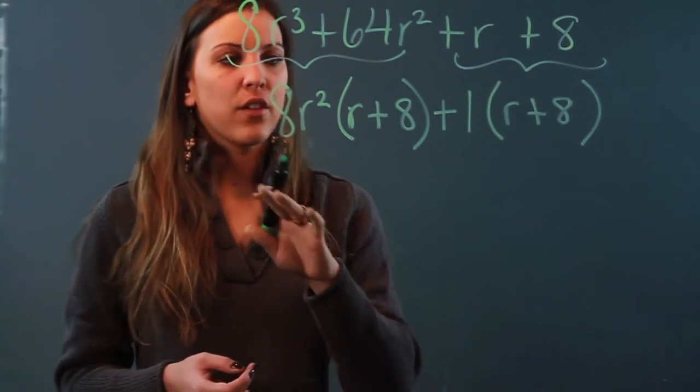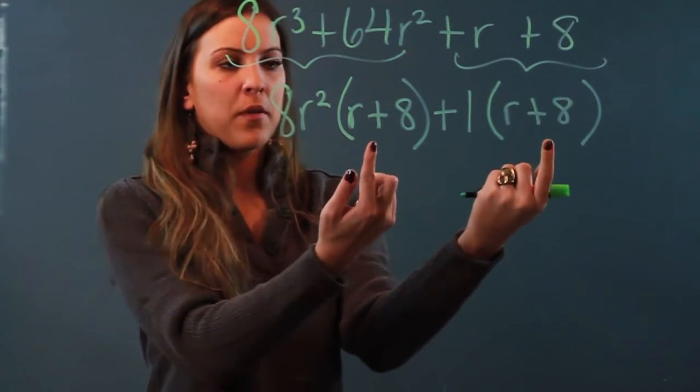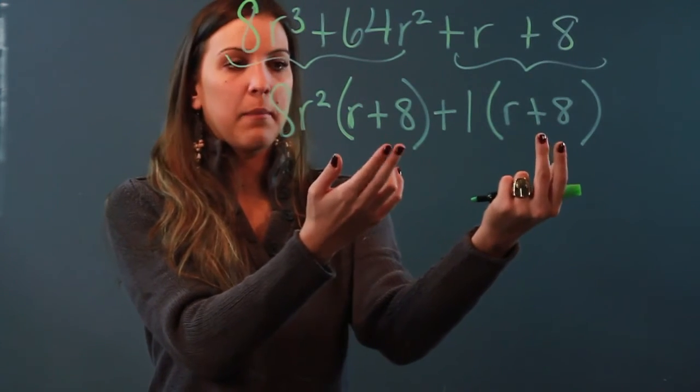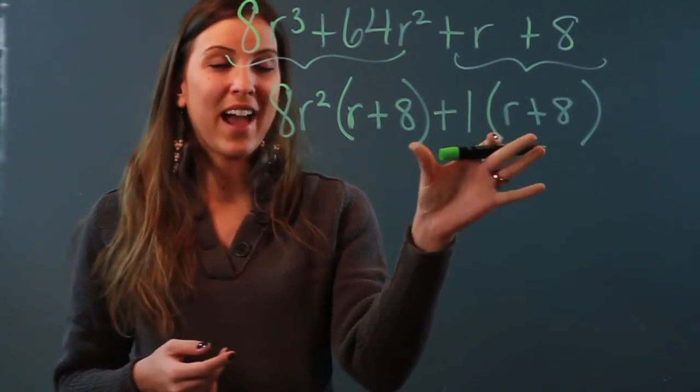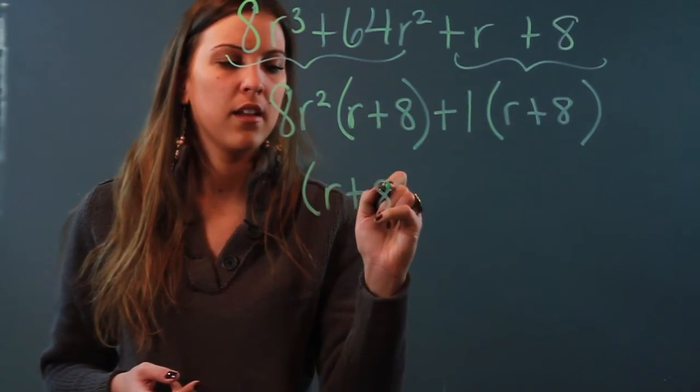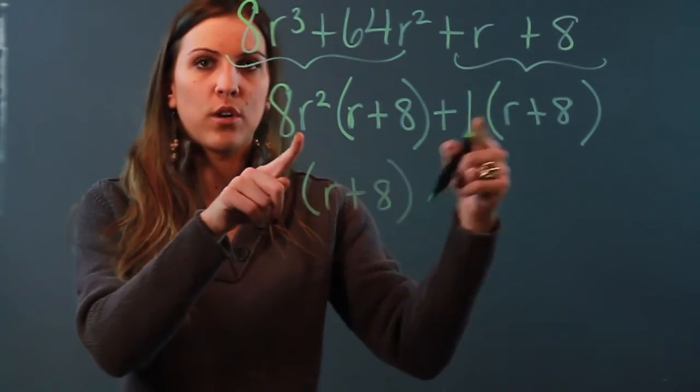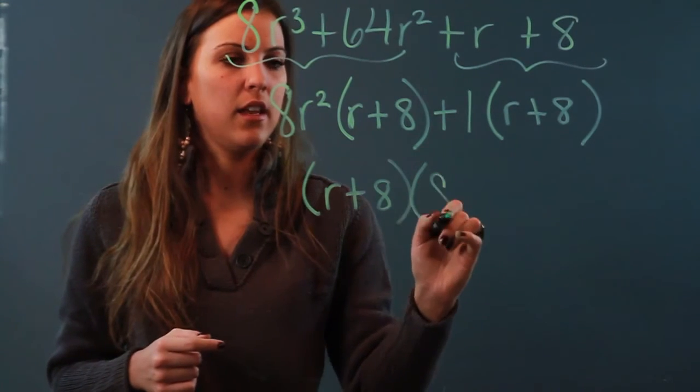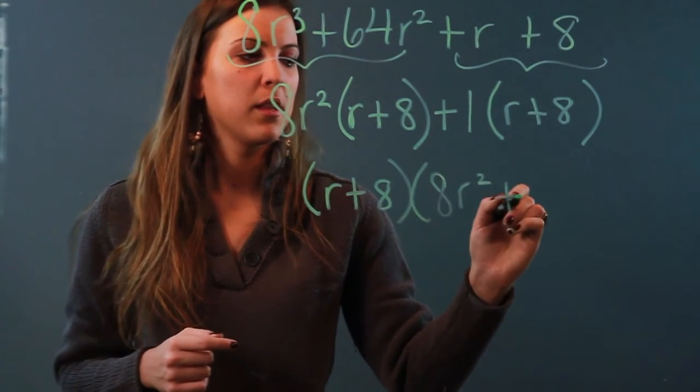Okay, now that you've factored by grouping, you have to make sure that both of your parentheses have the same terms inside. Because they do, I factor out this term. So I factor out an r plus 8, and my remaining two terms go in their parentheses: 8r squared plus 1.